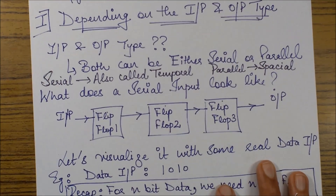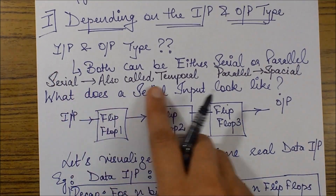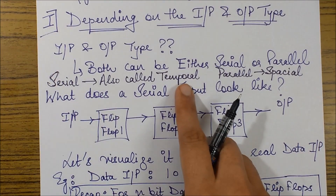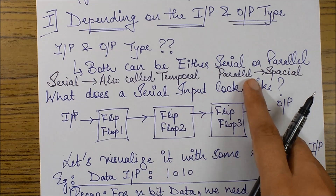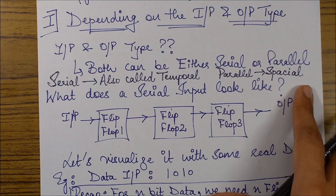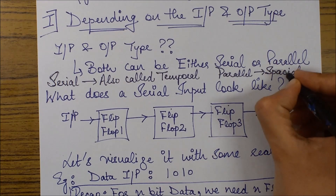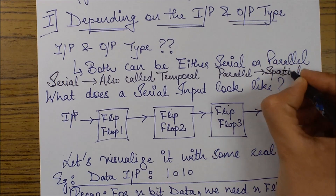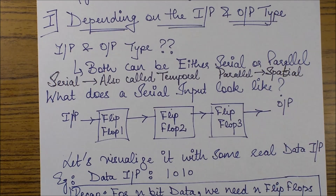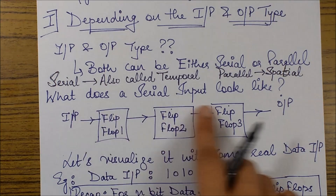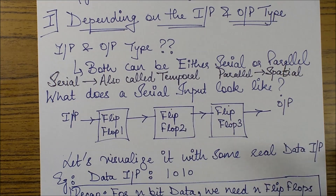Serial is also known as temporal, so serial data has another name: temporal. And parallel data is also known as spatial. So what does the serial input look like?